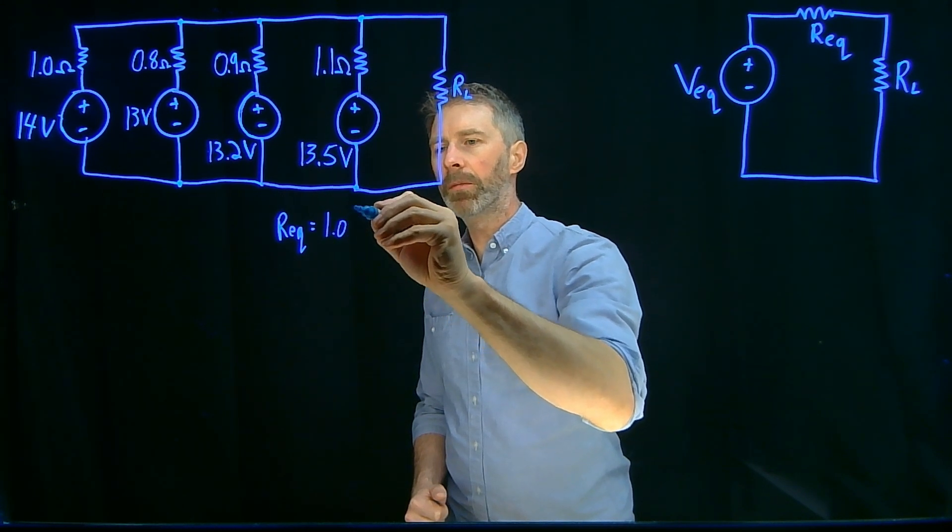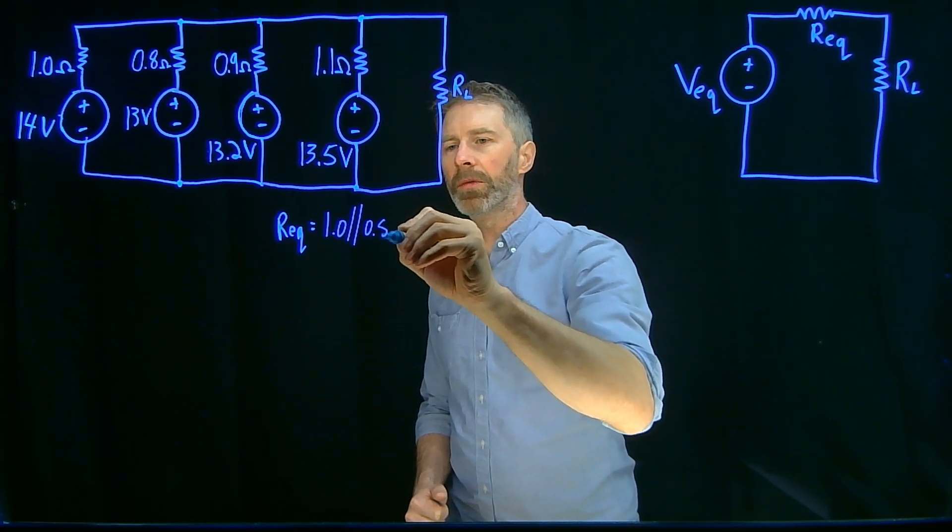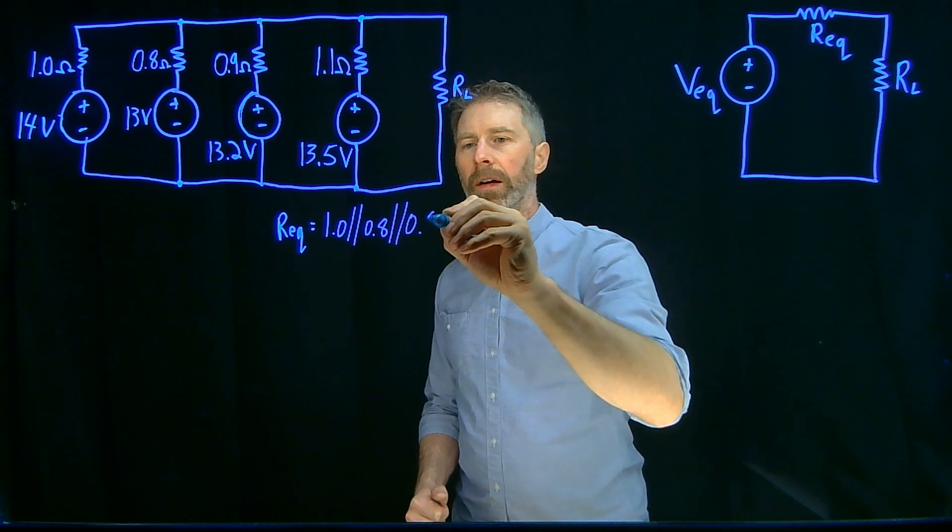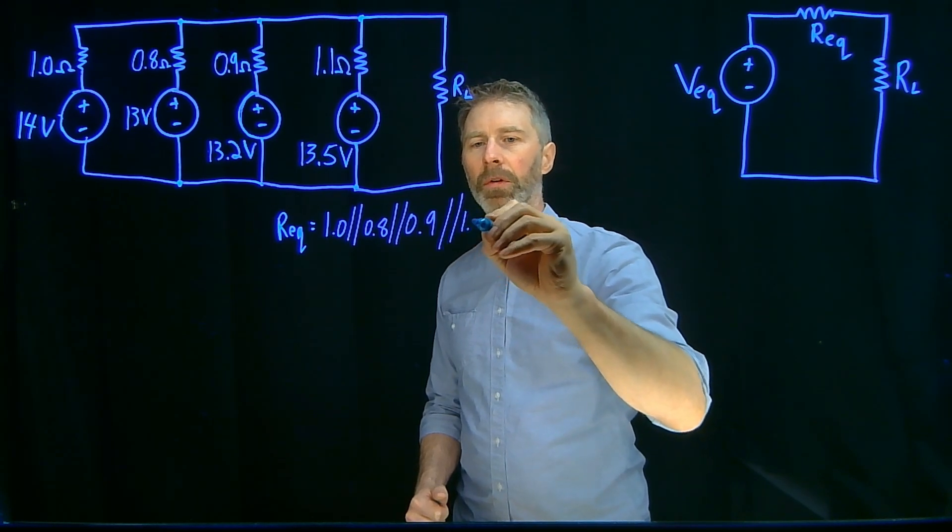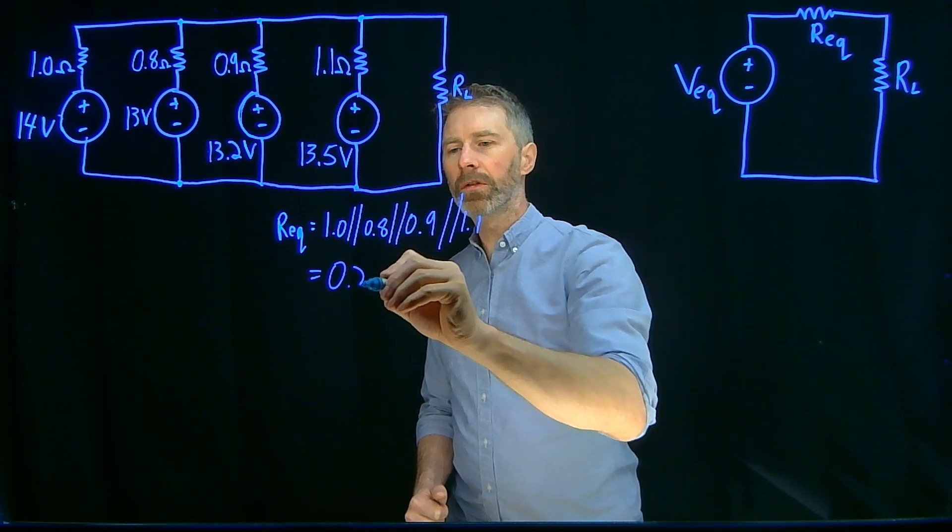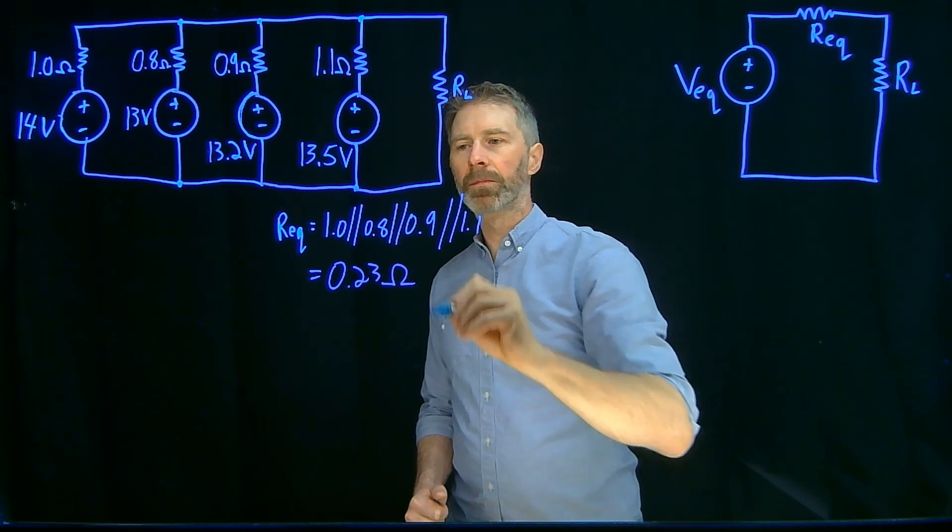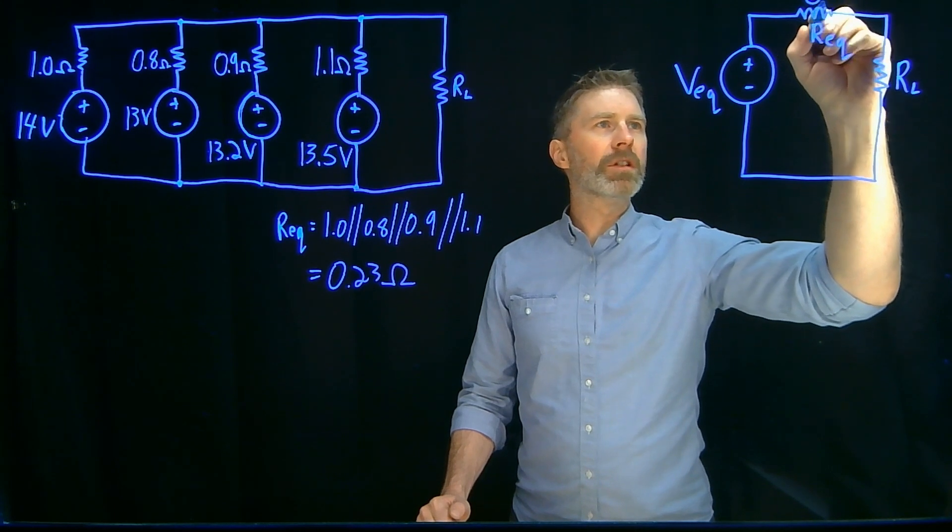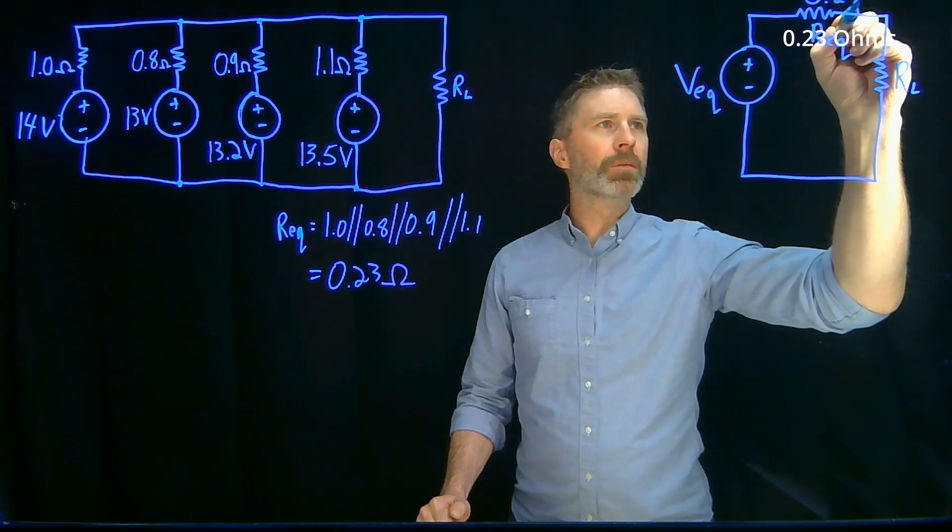So it'll be 1 ohm in parallel with 0.8 ohms, in parallel with 0.9 ohms, in parallel with 1.1 ohms. And that works out to 0.23 ohms. So the equivalent resistance in this circuit is 0.23 ohms.